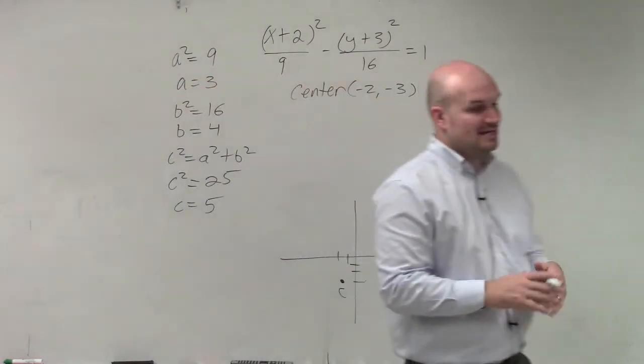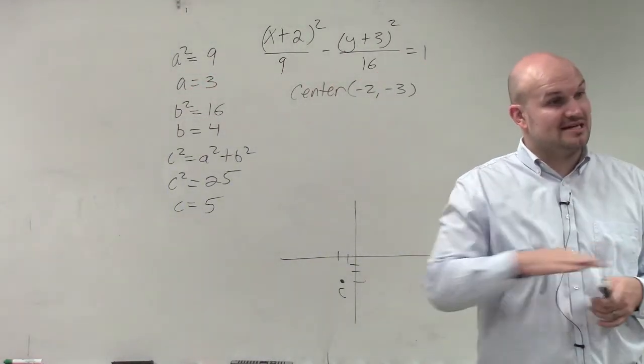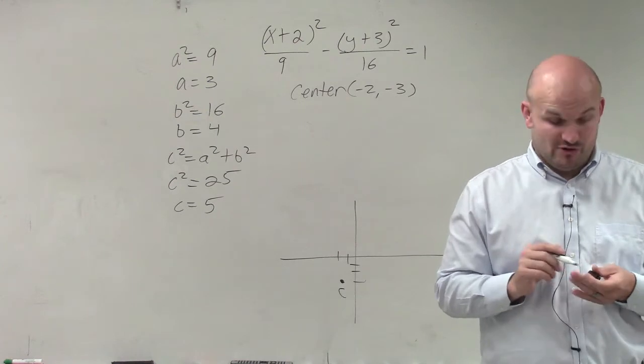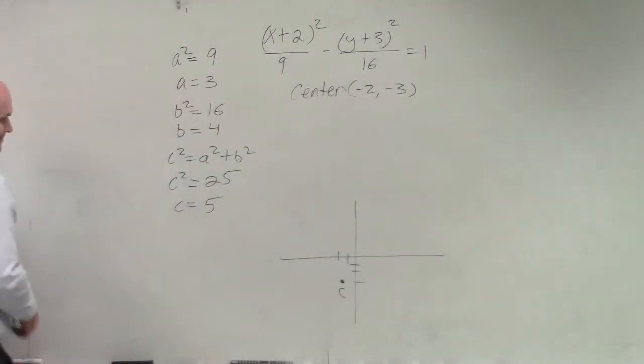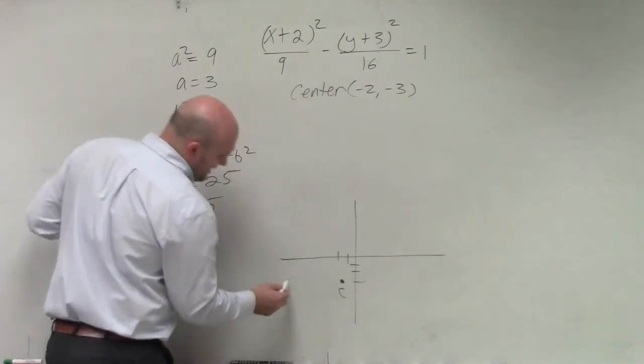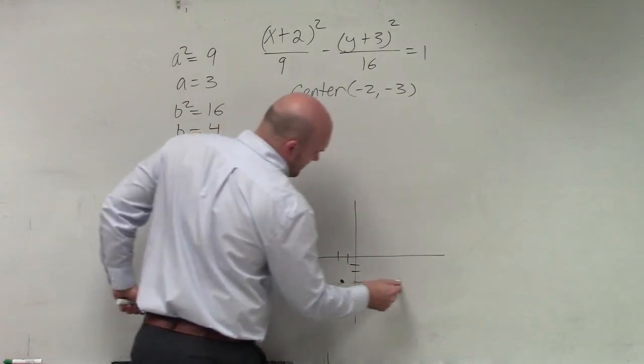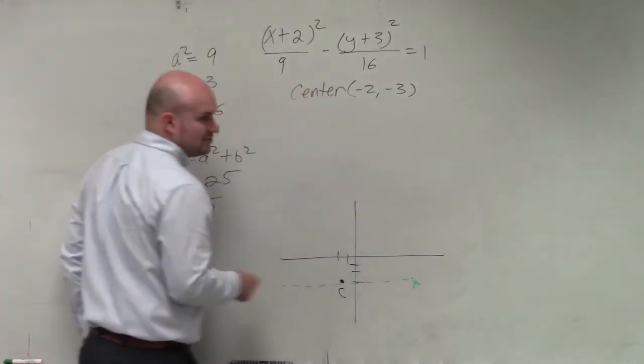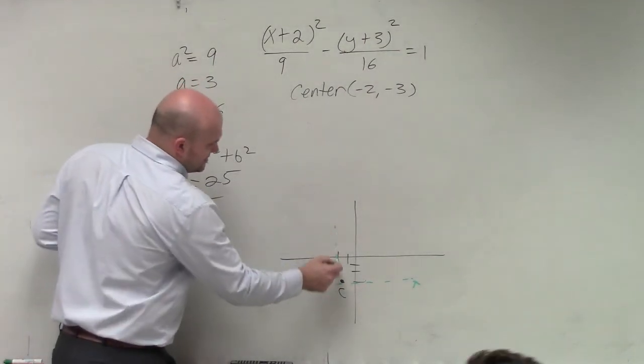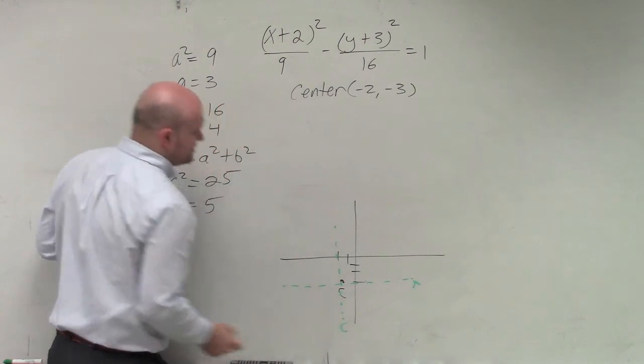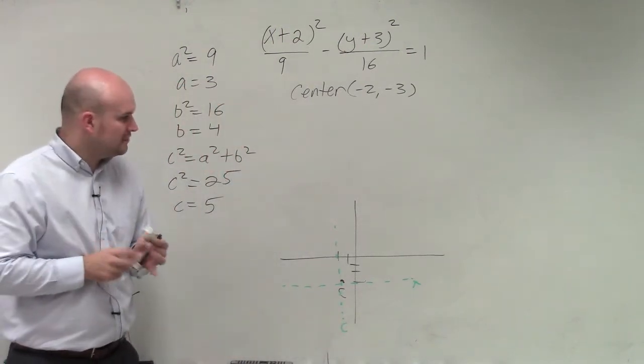Since my a is under my x, I know that my transverse axis is horizontal. It's not required to do this, but I highly recommend doing it because people usually make mistakes here. So I write in my transverse axis, I'll just put a nice T there. You don't need to write your conjugate axis, but if you wanted to, you could say that's your conjugate axis. They're perpendicular of one another.